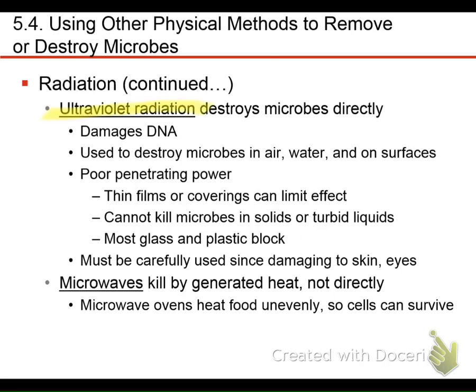UV radiation is pretty good on surfaces but doesn't penetrate through many plastics and glass because it's relatively weak. We can use it to destroy microbes in the air and water. Inside the stainless steel cabinet in the lab, when you close the sash and flip a switch, a UV light turns on and sterilizes all surfaces inside. Even a thin coating over a surface will reduce UV penetration effectiveness. If organisms are in solid materials or turbid liquids, UV won't be as effective at killing them.